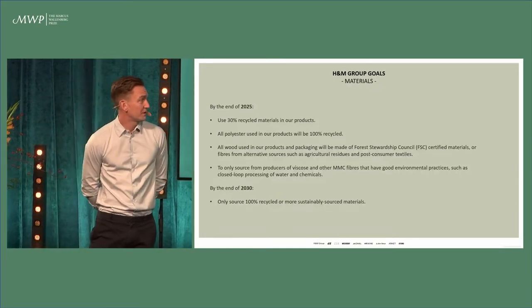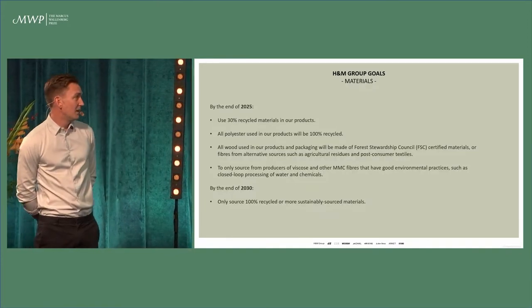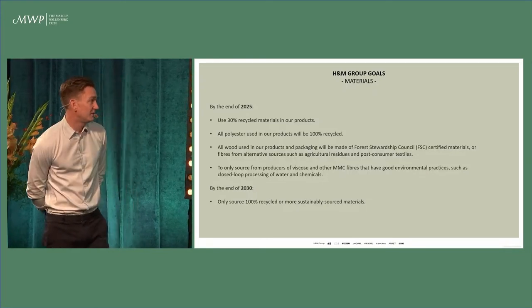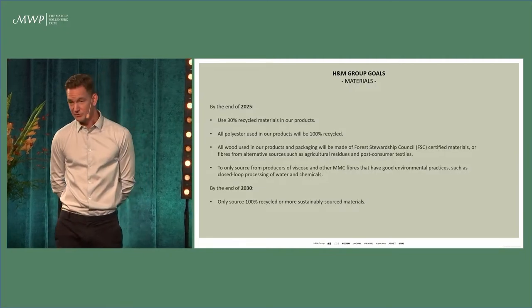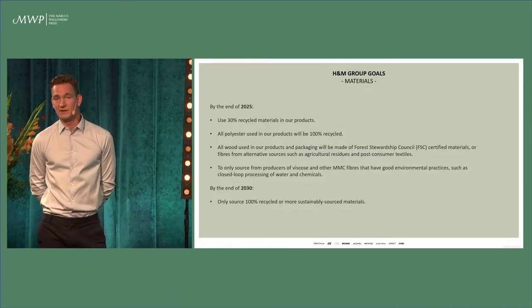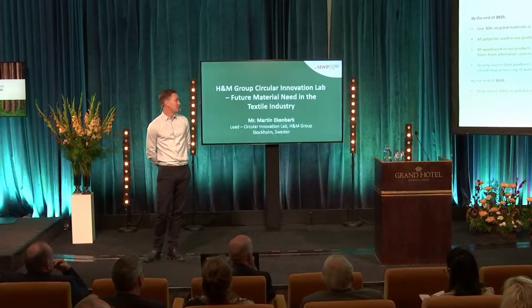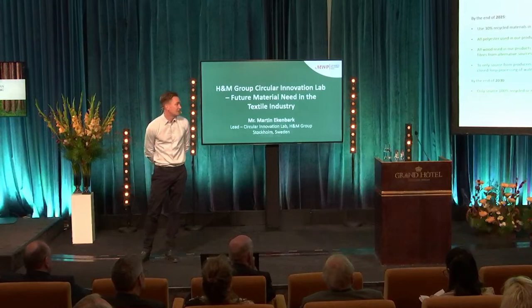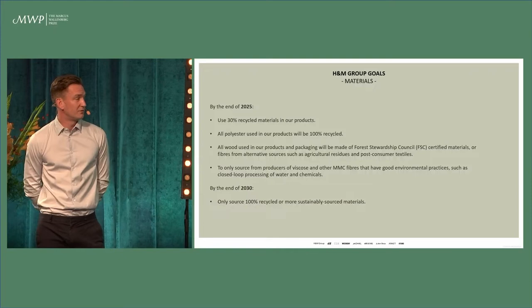All polyester used in our products will by 2025 be 100% recycled. All wood used in our products and packaging will be made from FSC certified materials or fibers from alternative sources such as agricultural residues or post-consumer textiles. We will only source from producers of viscose and MMCF fibers that have good environmental practices such as closed loop processing of water and chemicals.